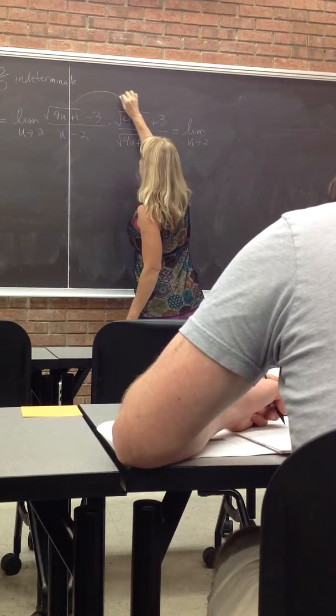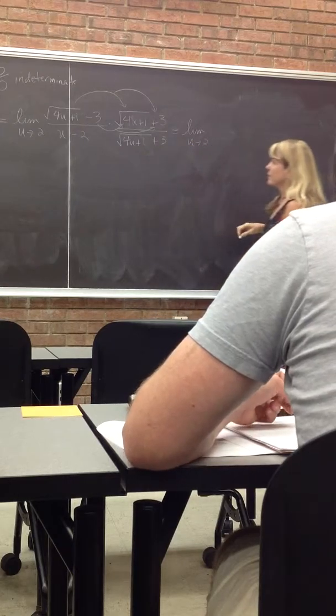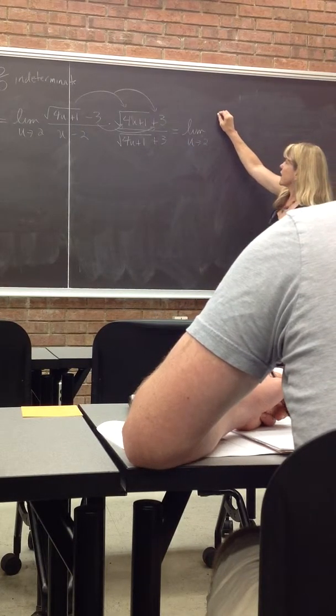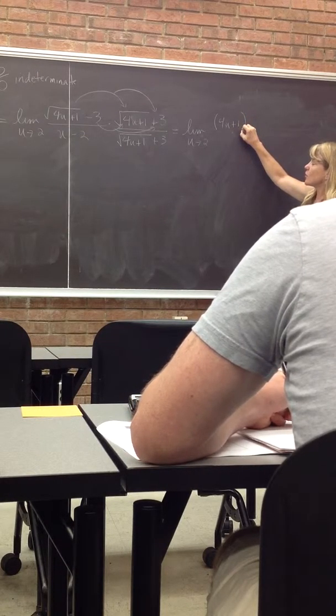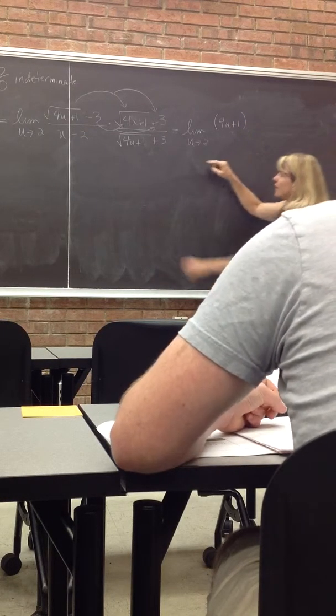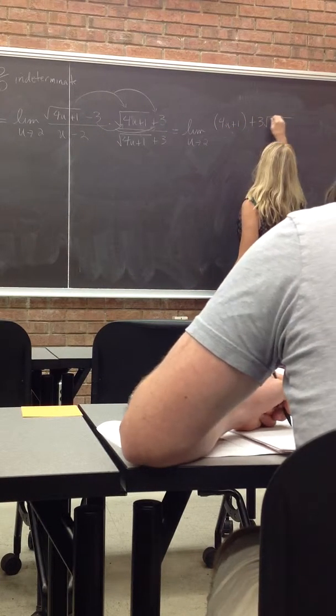So when I multiply those two numerators together, the square roots cancel out on the 4u plus 1. And then I get plus 3 times the square root.